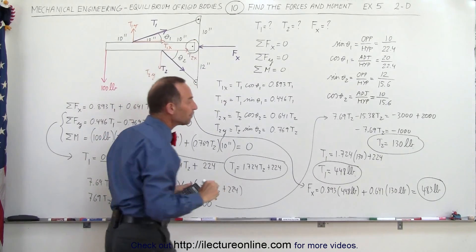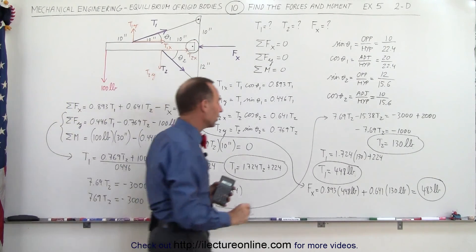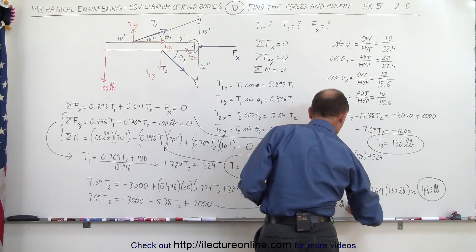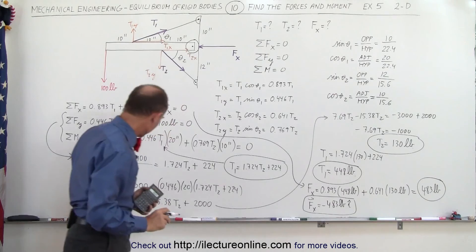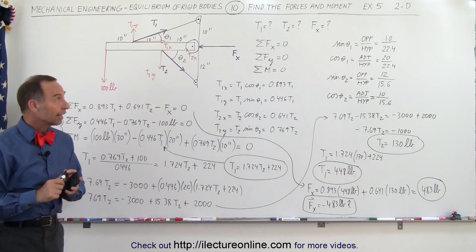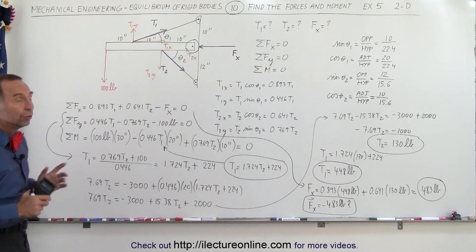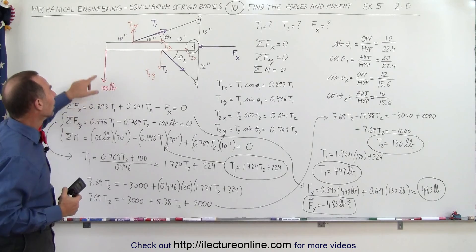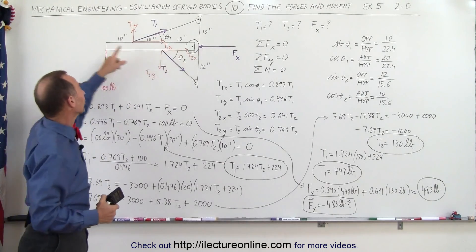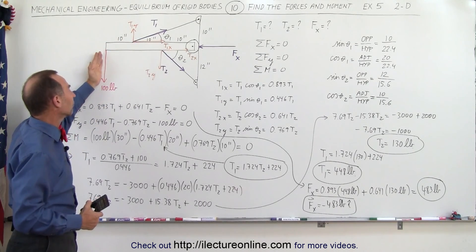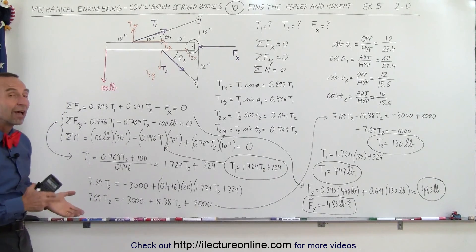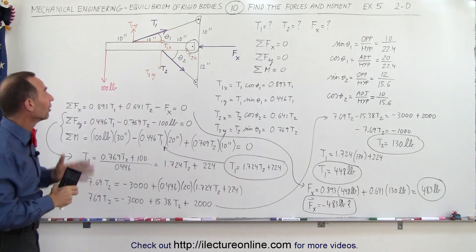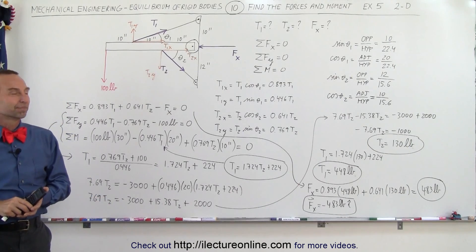Writing that in vector format: F_x = −483 pounds in the i-direction. That's how we find the various forces acting on both cables and the reaction force at the wall. There's no moment at the wall because it's connected via a wheel, giving only perpendicular forces. We did need the sum of moments about that point to find all three unknowns, using sum of forces in x, sum of forces in y, and sum of moments about a point.